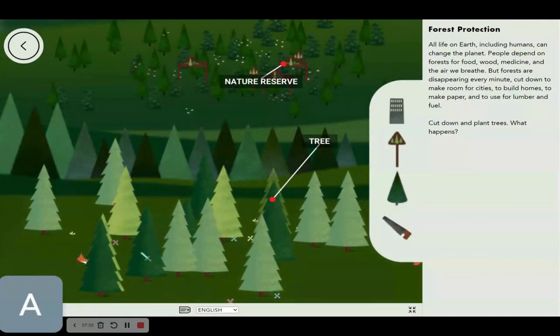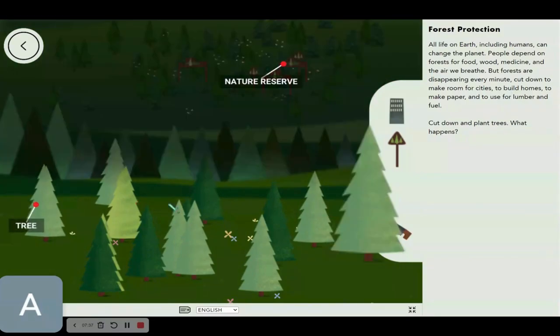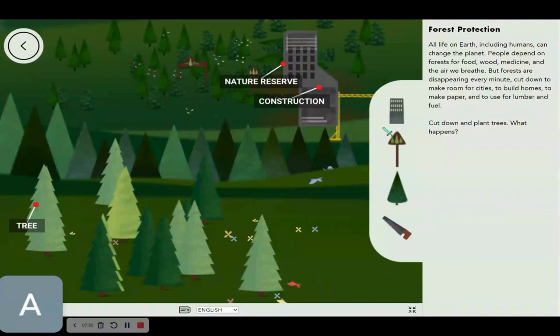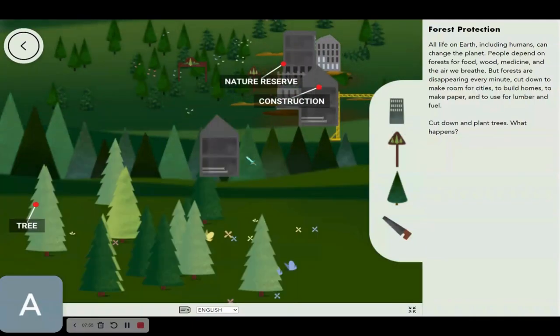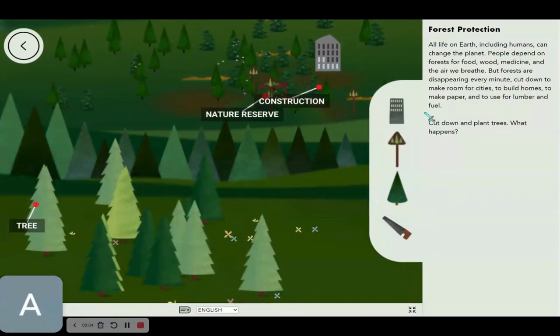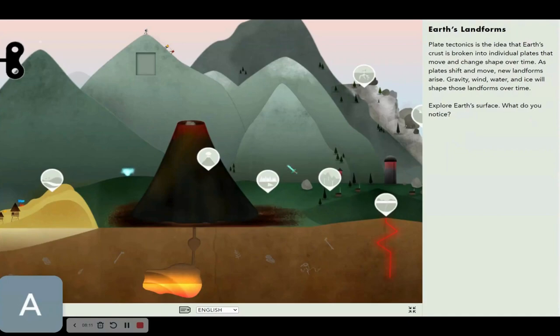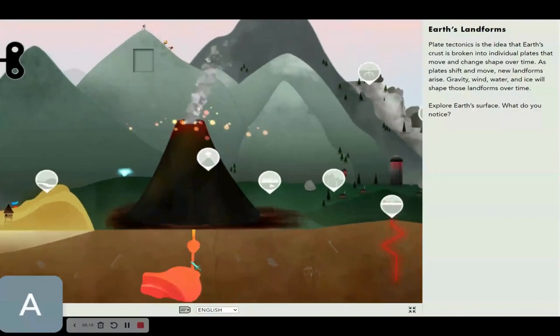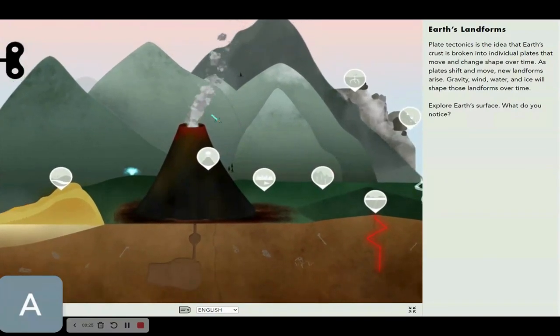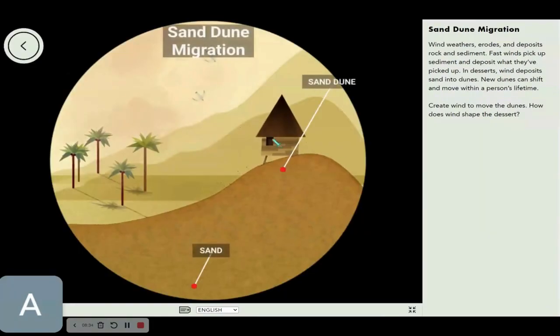The only reason climate is getting worse is because we're chopping down the trees with absolutely no mercy. But if we place construction, that automatically destroys nature, making it even worse for our environment. But placing nature reserves ensures that construction can't happen, less things to get damaged. Oh, that's a cool volcano. Now let's take a look at that. Wow, that's some cool rock.